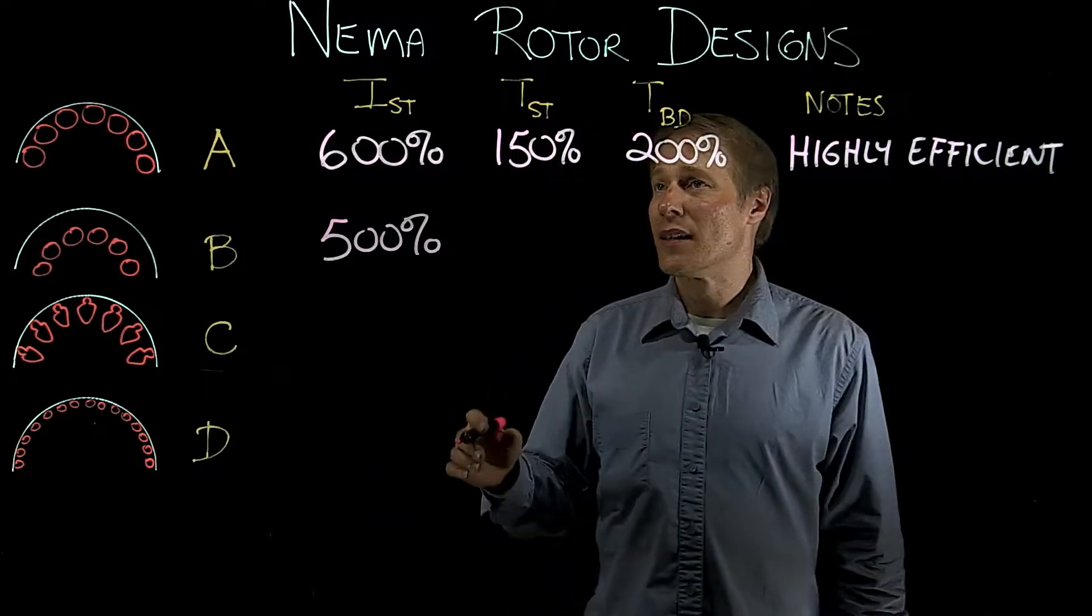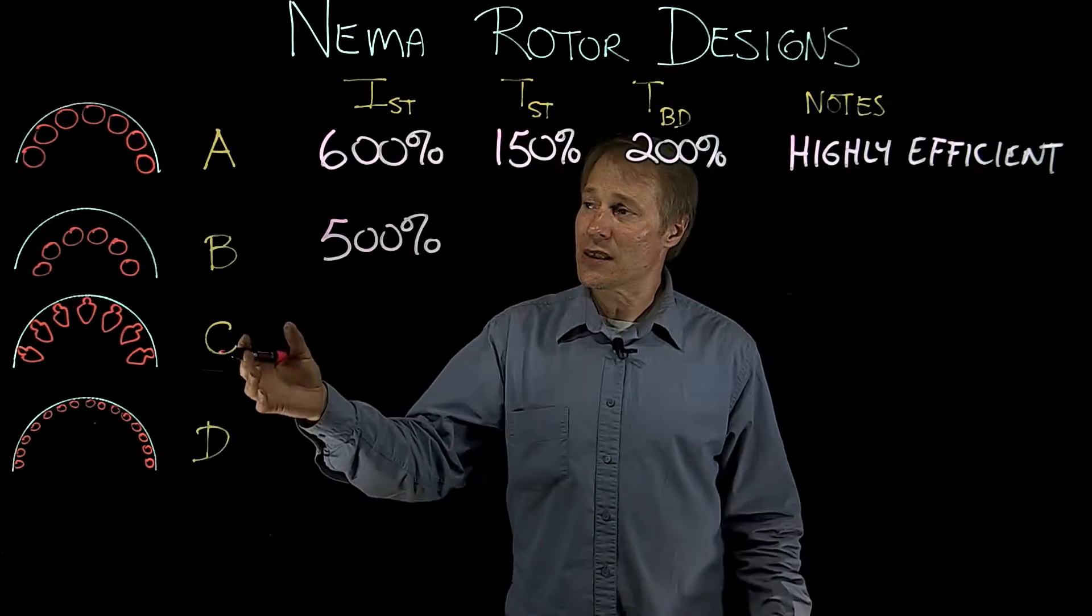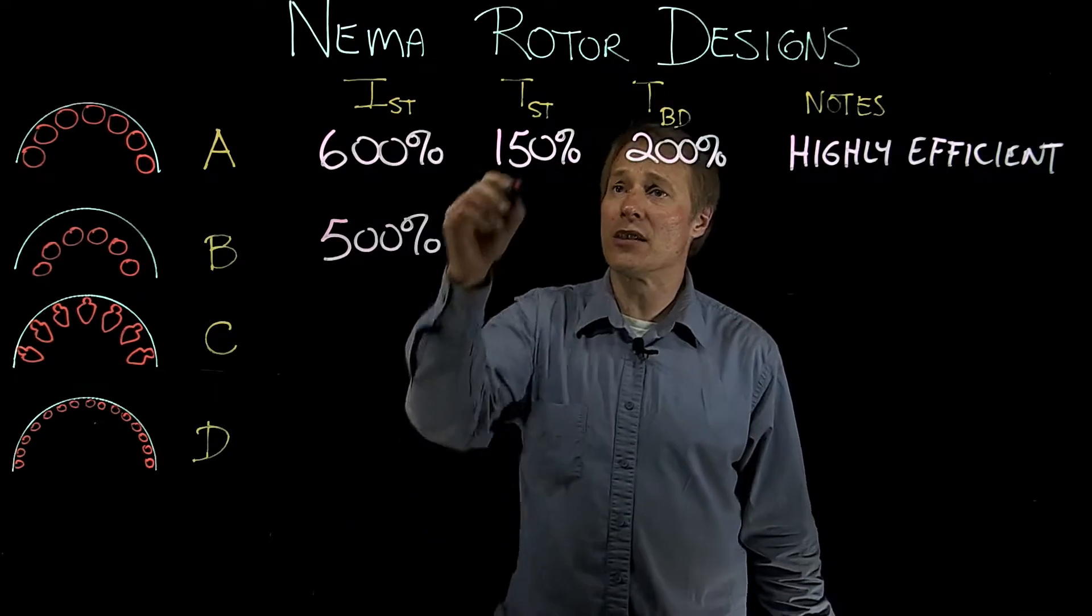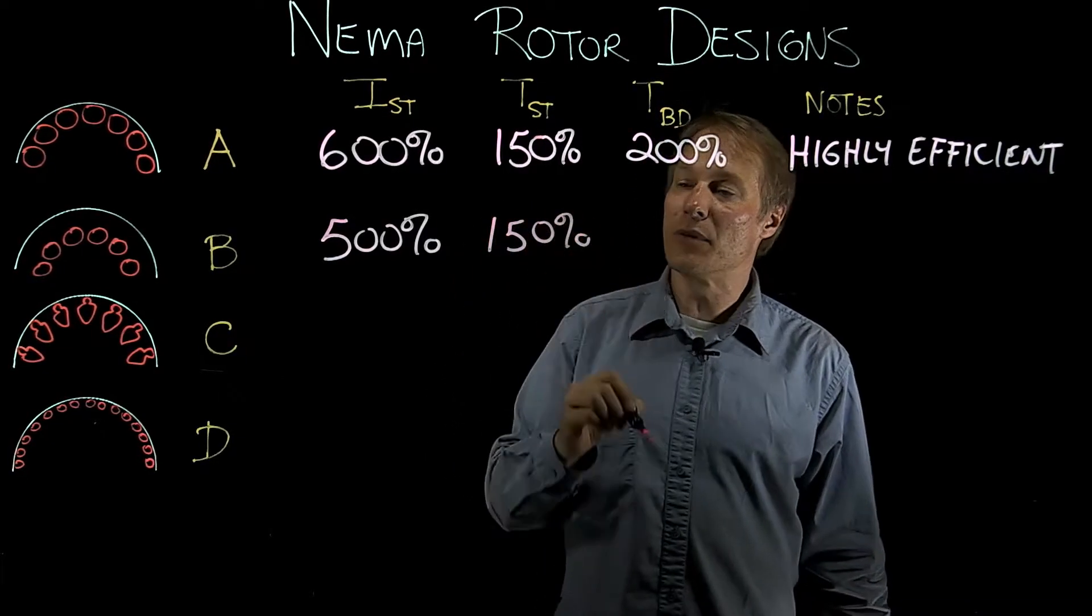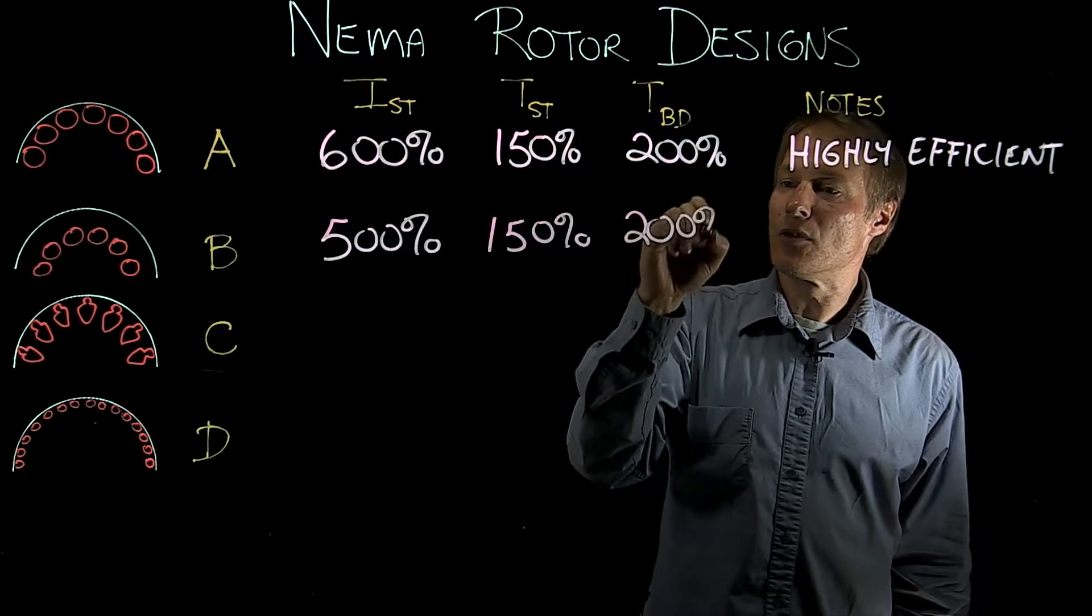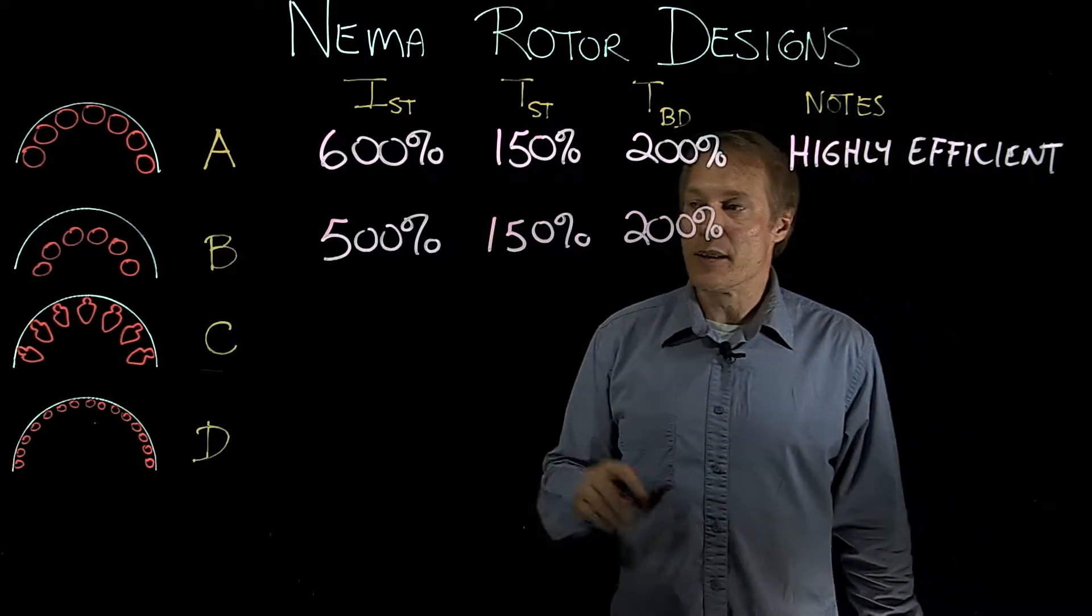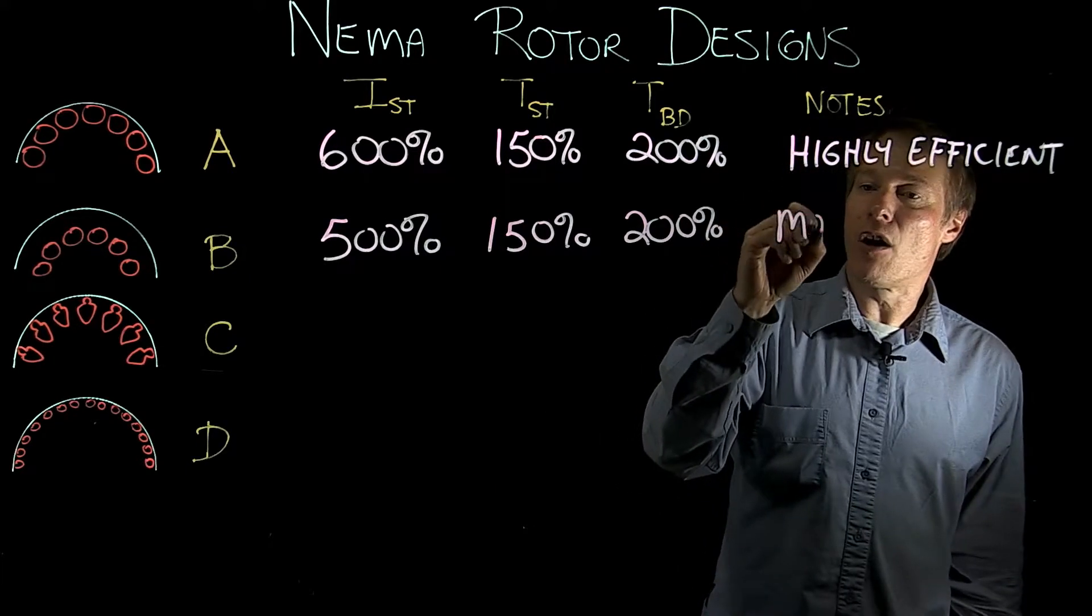Now the starting torque, that's dependent upon the in-phase current. Well the resistance isn't changing, so the in-phase current doesn't change. So it's also going to be 150%, and the breakdown torque is going to stay the same too, at 200%. The main characteristic of this rotor is it is the most common rotor.